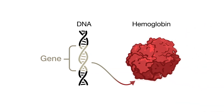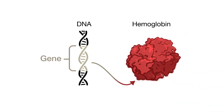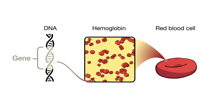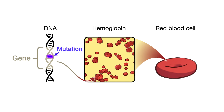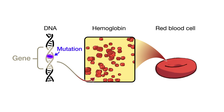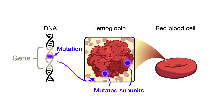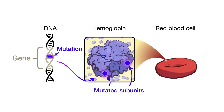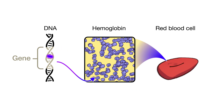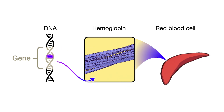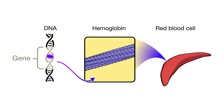The gene codes for a subunit of the protein hemoglobin, the protein in red blood cells that binds oxygen. A mutation in a single nucleotide in the gene causes a single amino acid change in each subunit, which in turn causes the hemoglobin molecules to stick together and change the shape of the red blood cells.